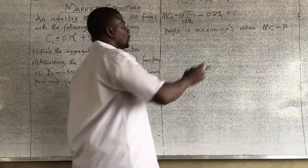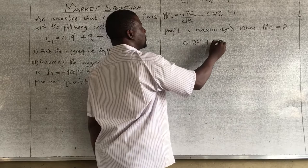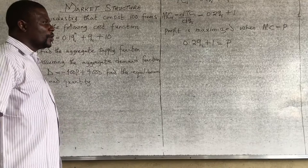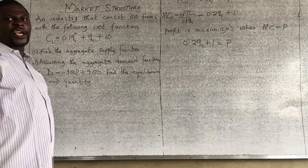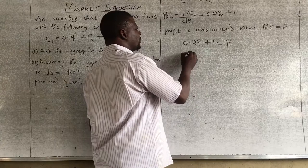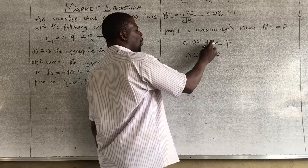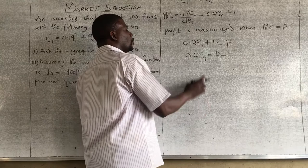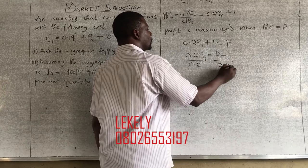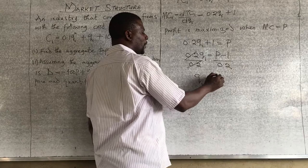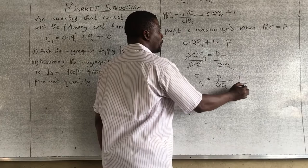For perfect markets, we have 0.2Q_i plus 1 equals P. From here, let's make Q the subject of the formula. So, 0.2Q_i equals P minus 1, therefore Q_i equals P over 0.2 minus 1 over 0.2. I share the 0.2 to both terms.